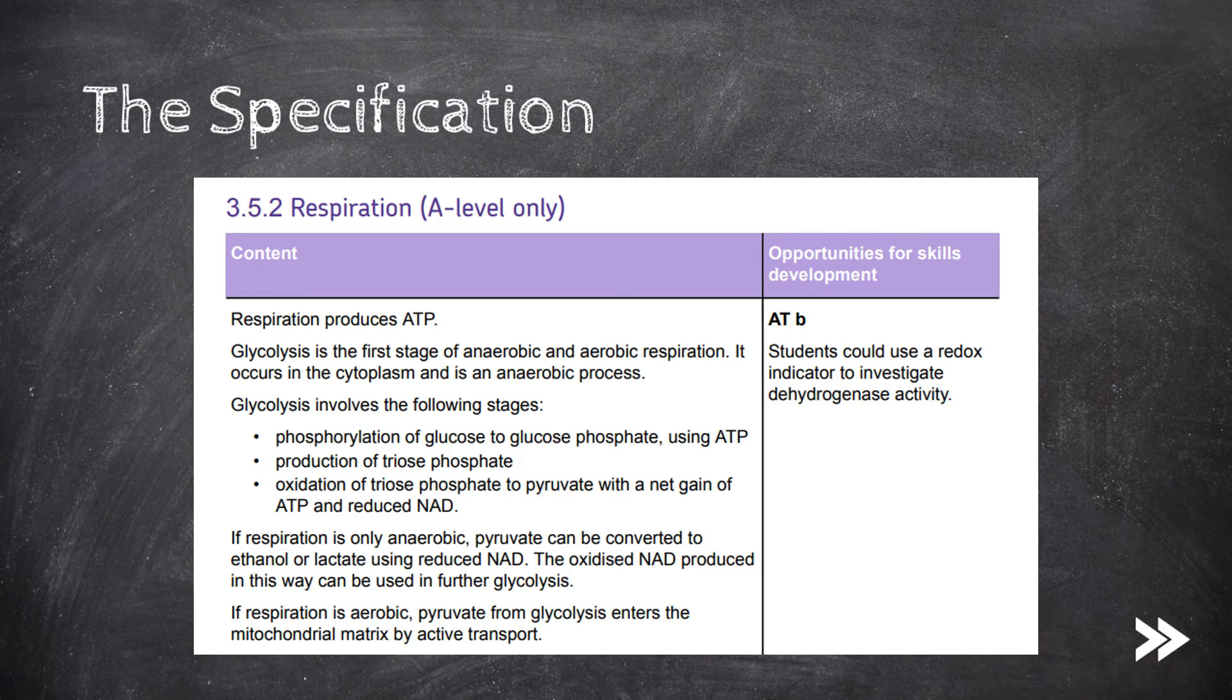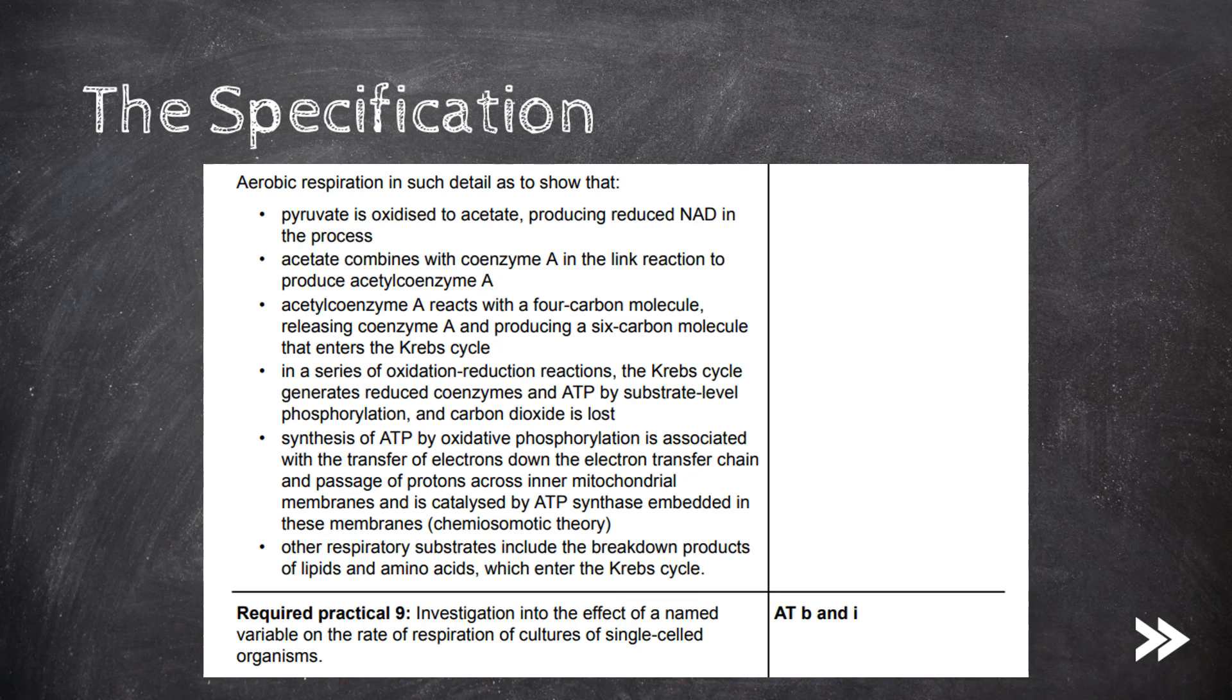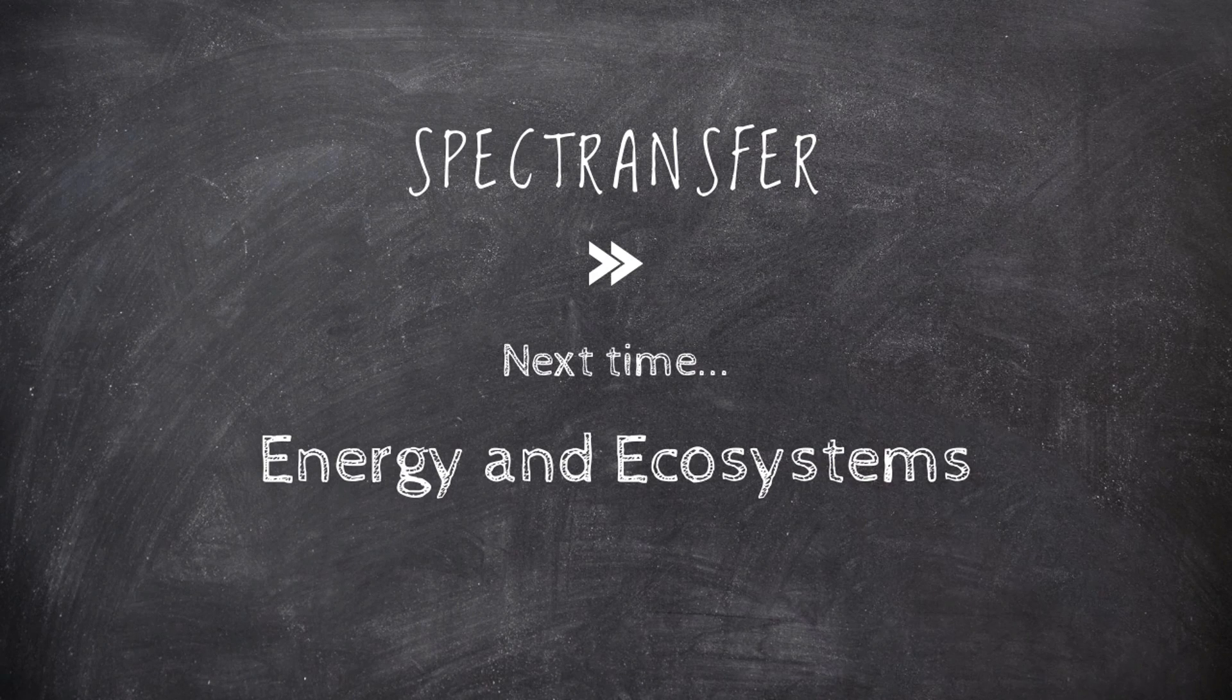Great, so that would be the spec covered. We've covered glycolysis, as well as anaerobic respiration in animals, plants and fungi, as well as how, if respiration is aerobic, pyruvate is actively transported into the mitochondrial matrix. We then covered the following stages in aerobic respiration, including the link reaction, the Krebs cycle and oxidative phosphorylation. Finally, we've considered that other respiratory substrates, such as the breakdown products of lipids and amino acids, may also enter the Krebs cycle. That would be it for now guys, thanks for watching, please subscribe.